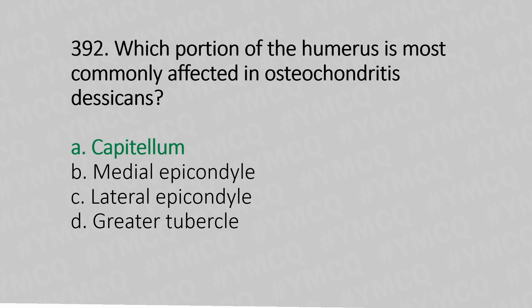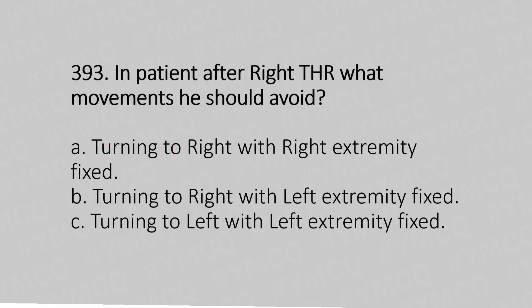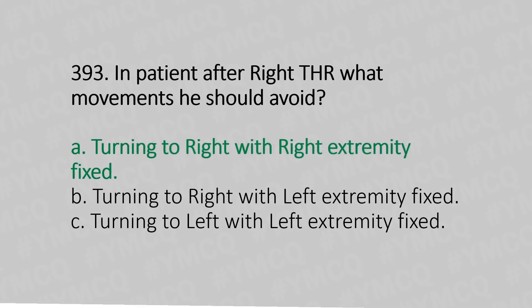Question 393: In a patient after right total hip replacement, which movement should they avoid? Option A: turning to the right with the right extremity fixed. Option B: turning to the right with the left extremity fixed. Option C: turning to the right with the left extremity fixed. The answer is Option A: turning to the right with the right extremity fixed.